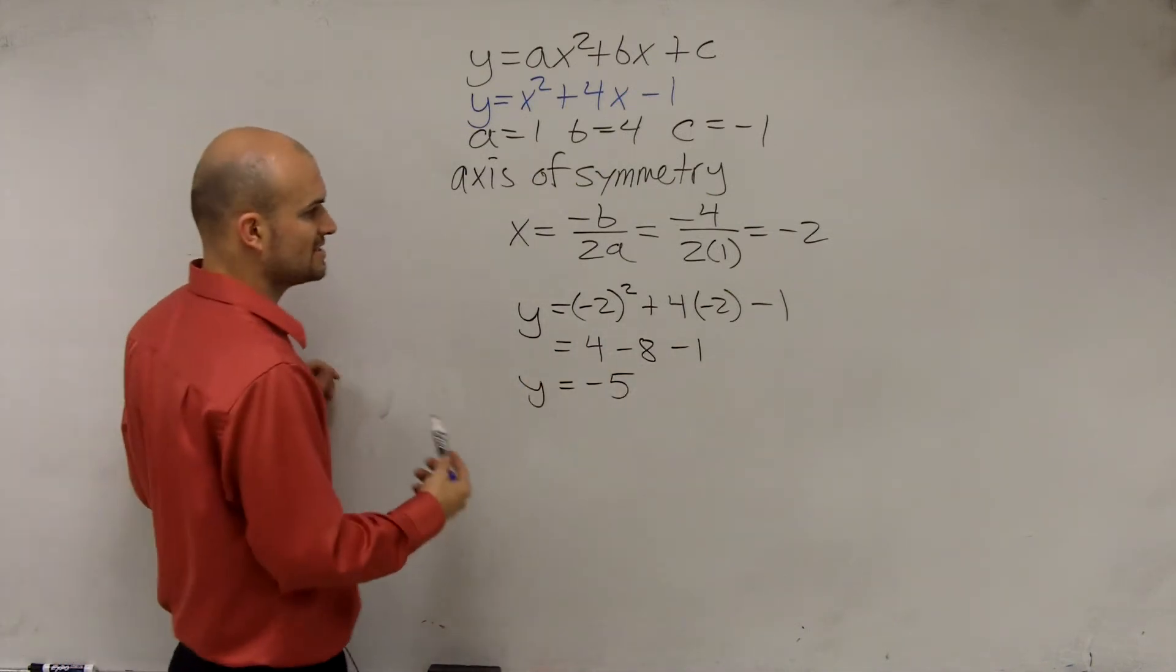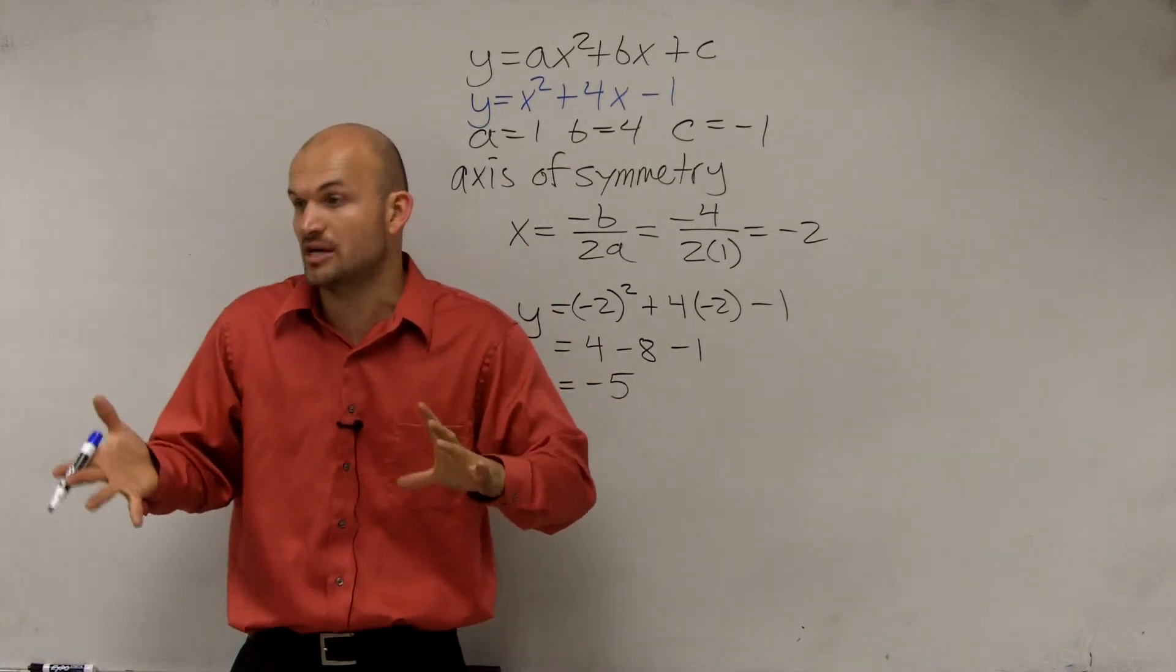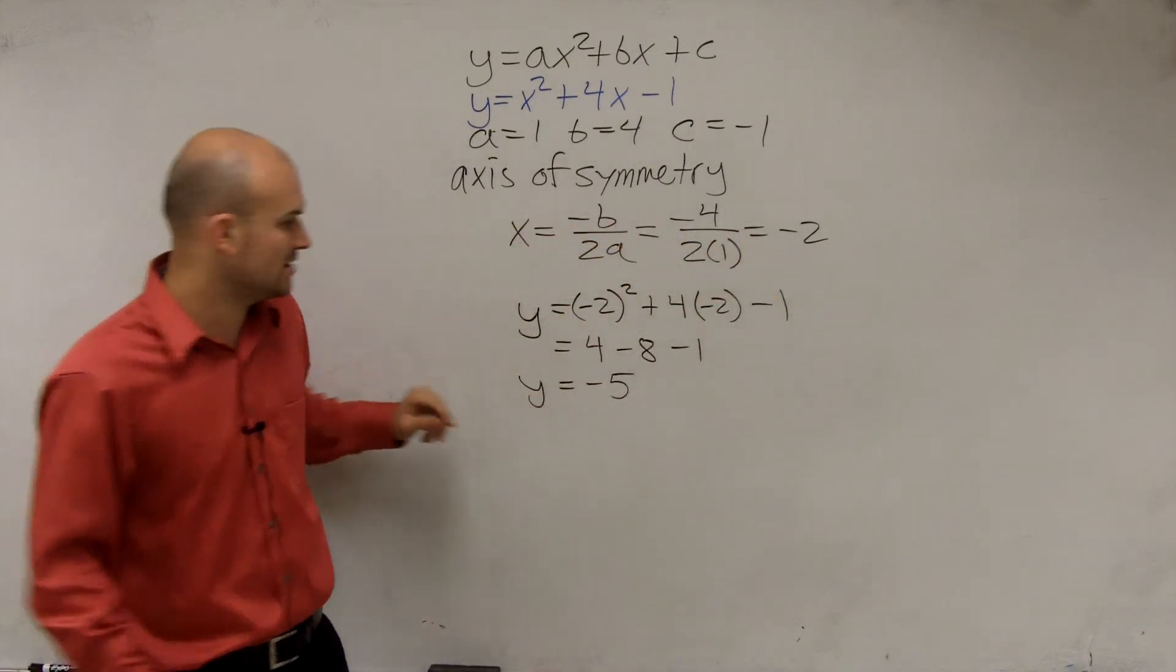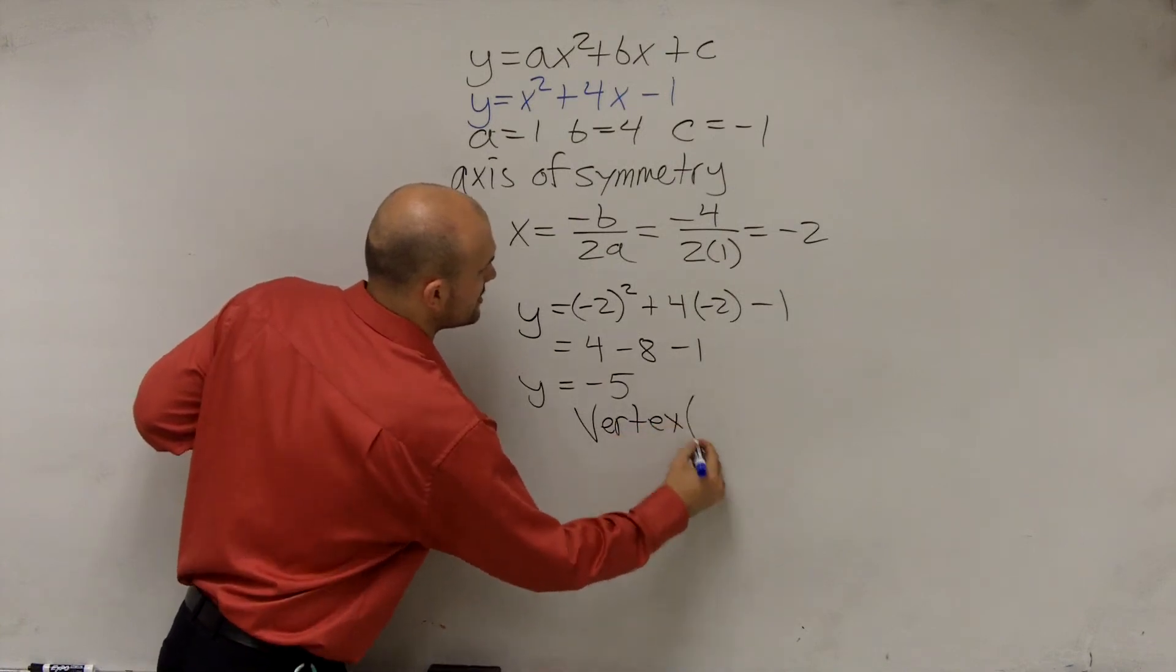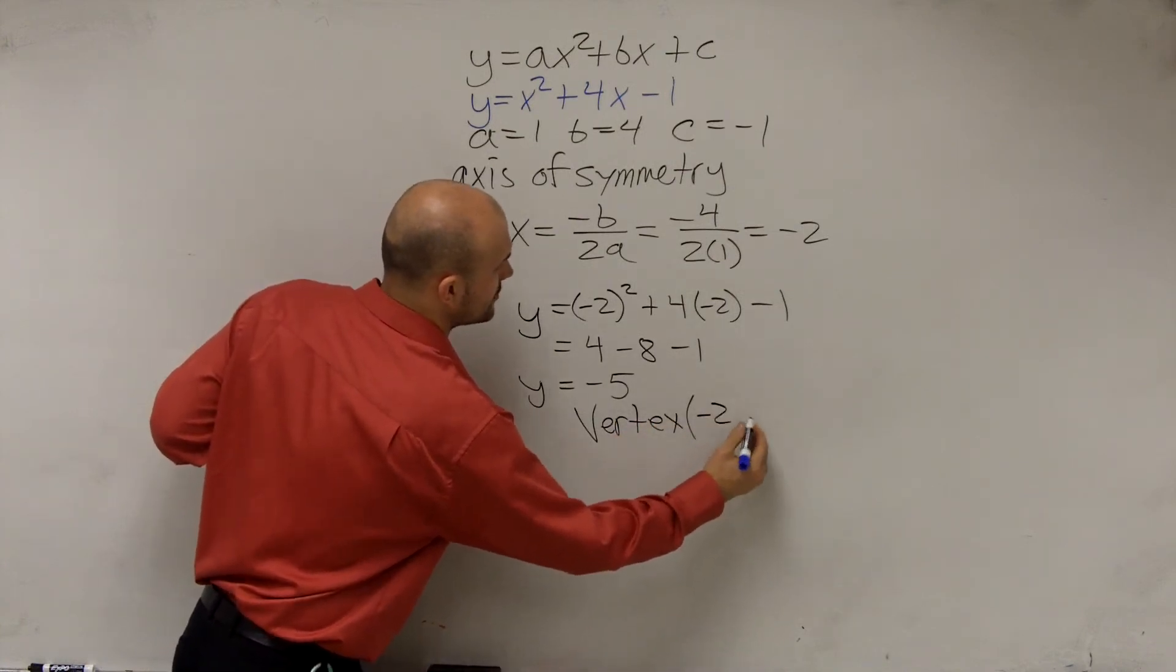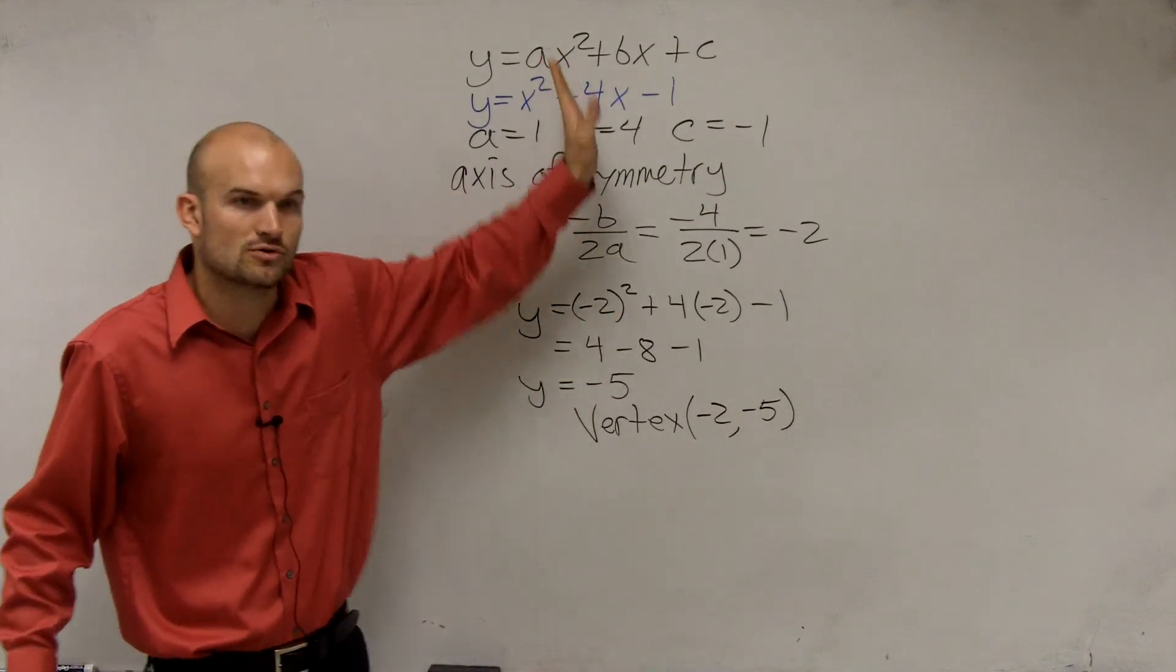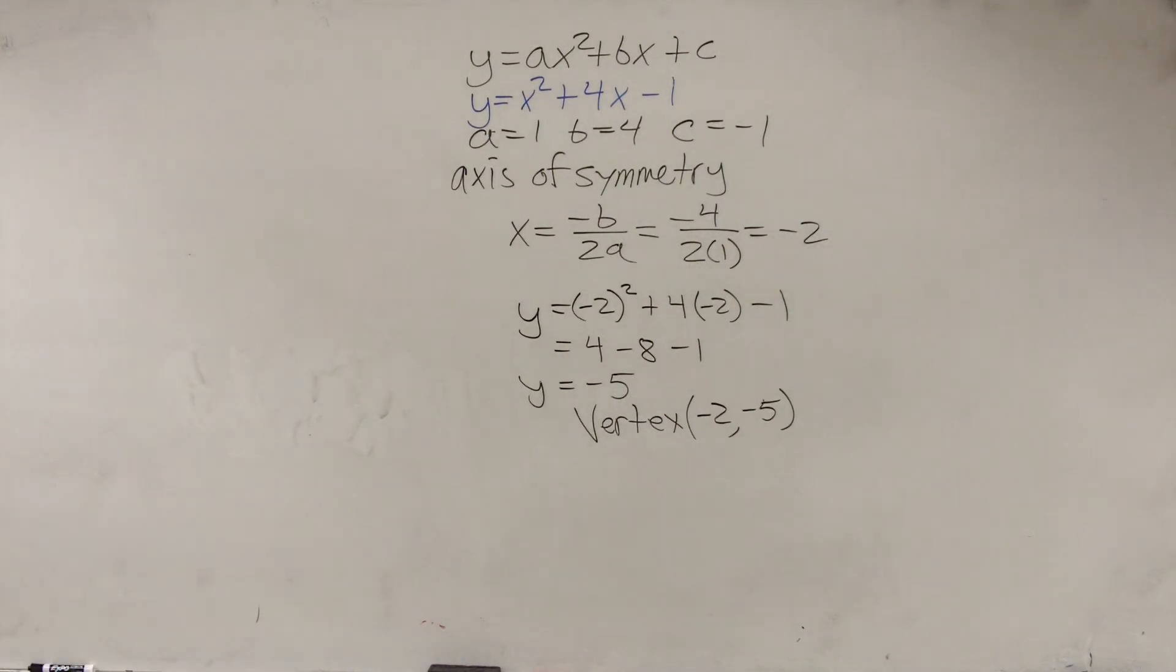So when I say, what is the vertex, the vertex, remember, is a coordinate point. It's either the max or the minimum of your parabola. So your vertex has an x-coordinate of negative 2 and a y-coordinate of negative 5. So you say the vertex is the coordinate point negative 2, negative 5. Because remember, the axis of symmetry is the x-coordinate of your vertex.